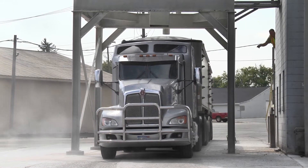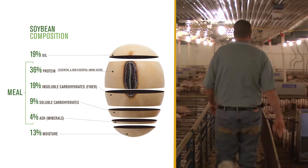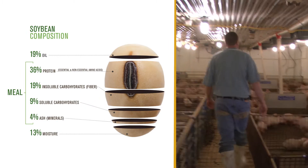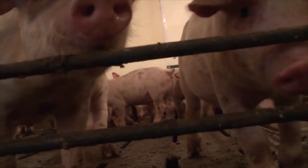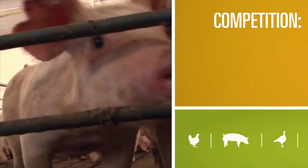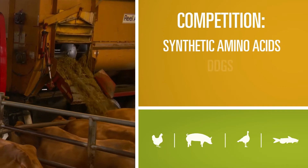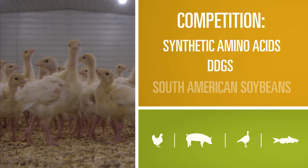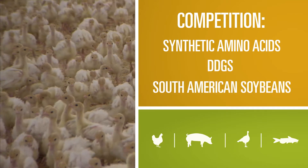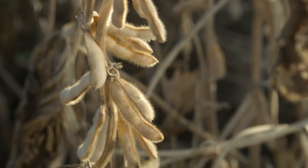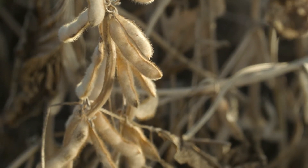While U.S. soybean meal offers nutritional properties animal ag wants, like amino acids, energy, vitamins and minerals, our soybean meal is facing tough competition from other feed ingredients, like synthetic amino acids and DDGs, and from other soybean suppliers, like soybean farmers in South America. If we don't deliver quality, those competitors will take our market share.